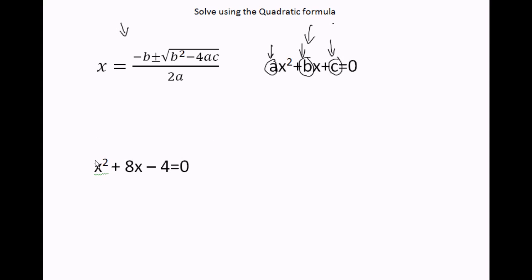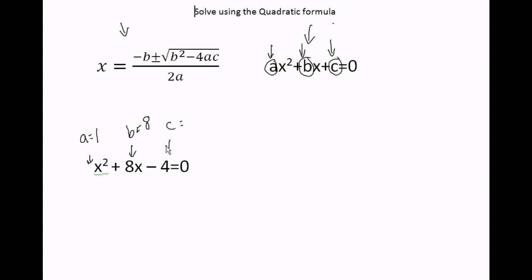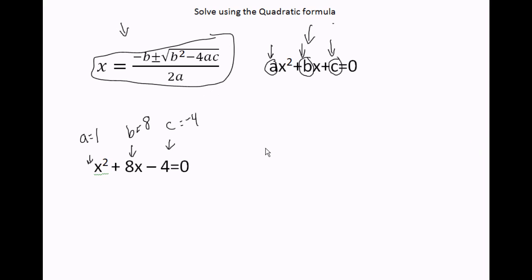Working the first problem: a equals the number in front of x squared. The number in front of x squared is an invisible one. b is the number in front of x, so b is 8. And c is the number without the x, so c is negative 4. All we're going to do is plug that into the quadratic formula.